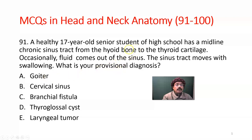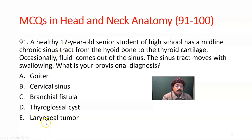Goiter means enlargement of the thyroid gland, but there is fluid coming out, so this is not goiter. Cervical sinus should be present laterally. Branchial fistula is again a lateral structure. Laryngeal tumor at the age of 17 is most unlikely, and there will be no fluid coming out of the sinus. So the answer should be thyroglossal cyst.